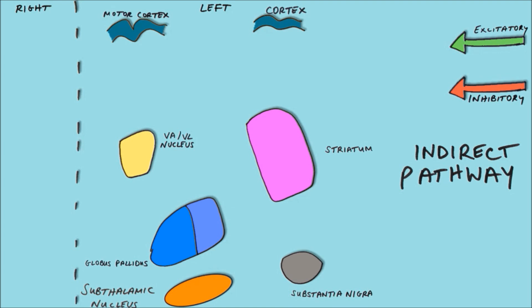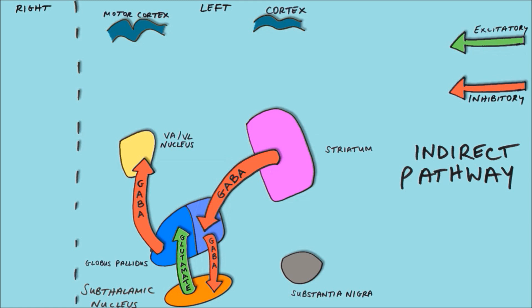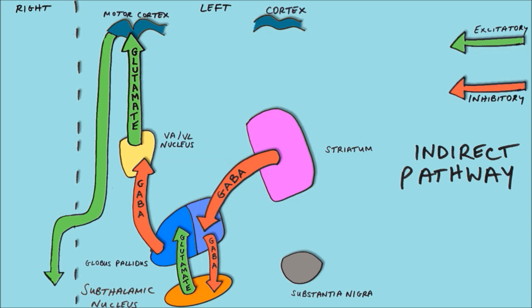We are now going to focus on the indirect pathway. Aside from all the structures we have already seen, we now have the subthalamic nucleus added in. The striatum projects inhibitory neurons to the lateral globus pallidus. The lateral globus pallidus inhibits the action of the subthalamic nucleus, whose job is to excite or enhance the activity of the medial globus pallidus. The medial globus pallidus inhibits the VAVL nucleus of the thalamus, which in turn stimulates the motor cortex, which provides motor output to the muscles of the body.